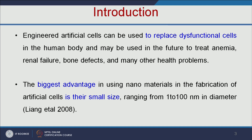In the previous lecture, we learned how to replace damaged tissue using a tissue engineering approach. In this lecture, we are going to learn how to make an artificial cell and how to replace damaged cells using the artificial cell approach. These engineered artificial cells can be used to replace dysfunctional cells and may be used in the future to treat anemia, renal failure, and many other health problems.